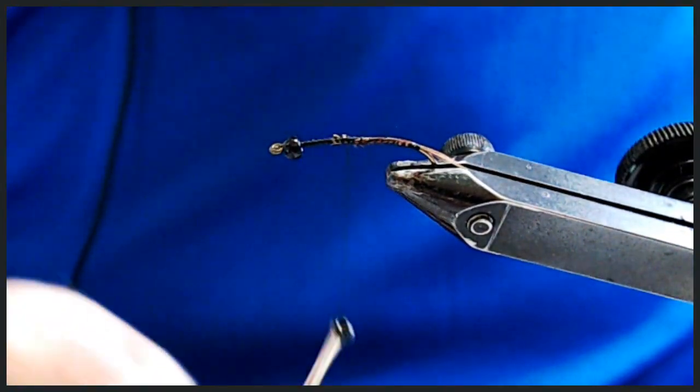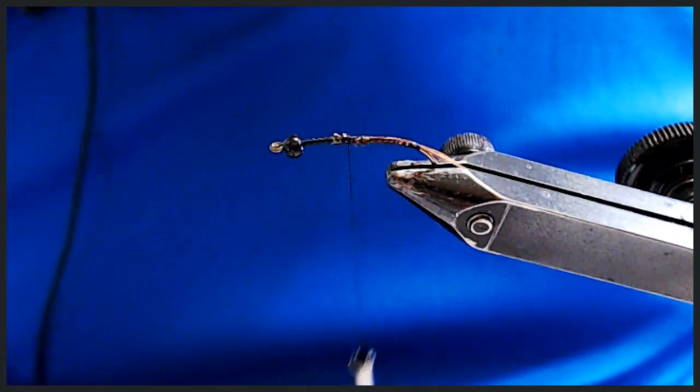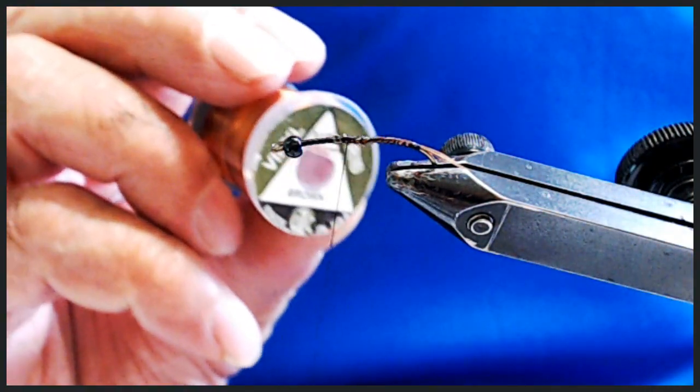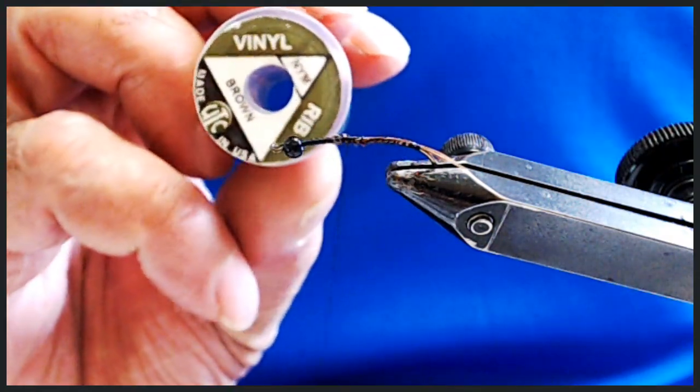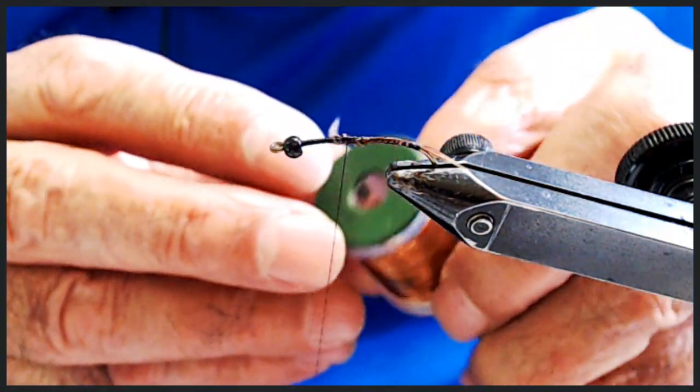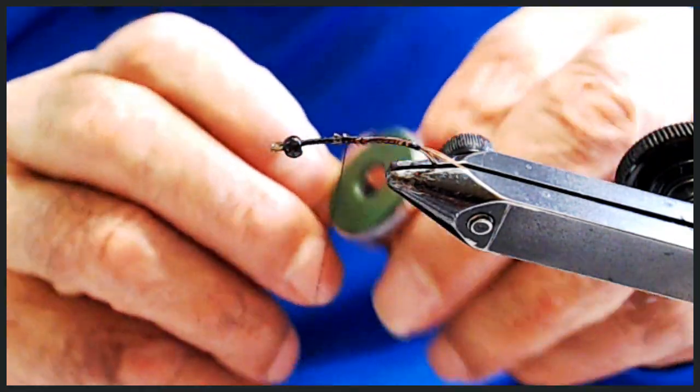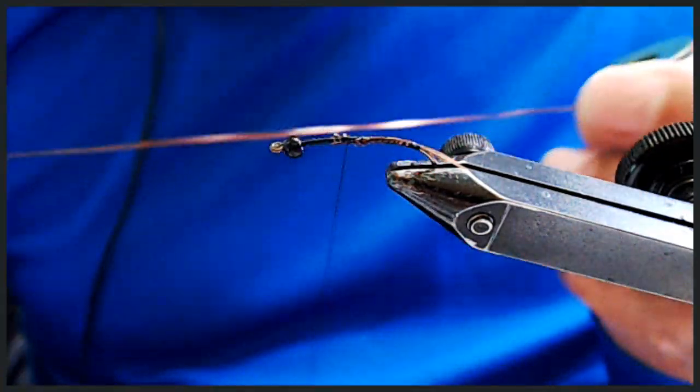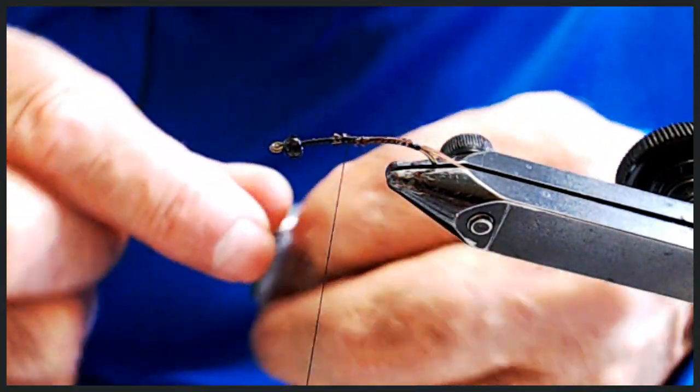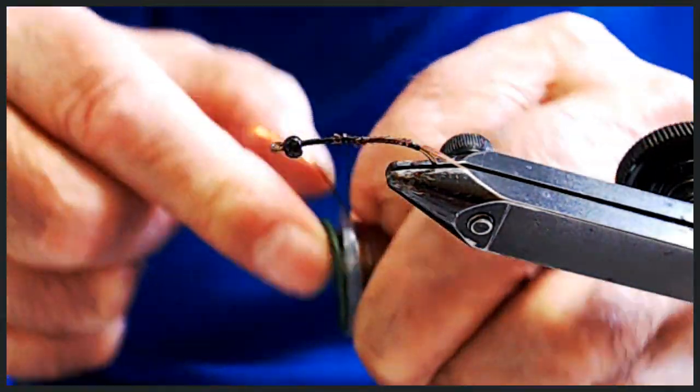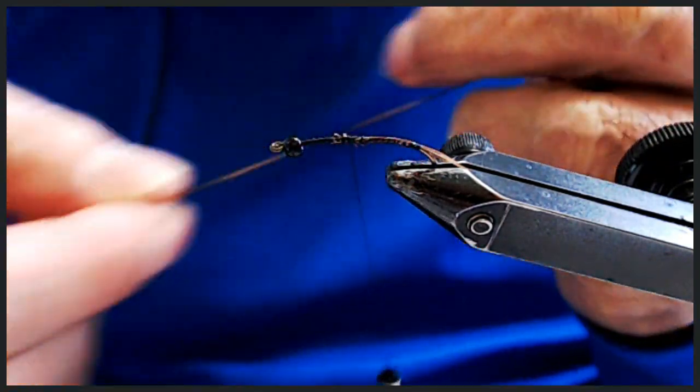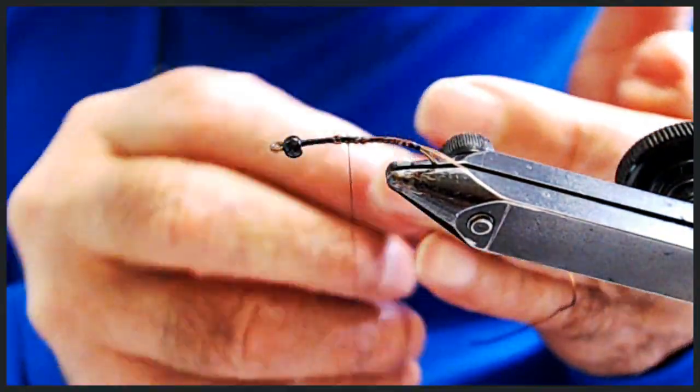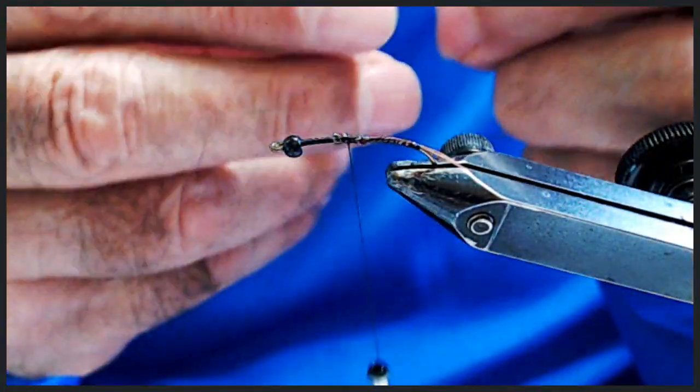Now for the body, I'm going to be using a vinyl rib and it's a nymph size so it's small and I'm going to be using two colors. This one is considered a brown. I would call it a light tan but it's a brown nymph. You tie that on one side of the shank.